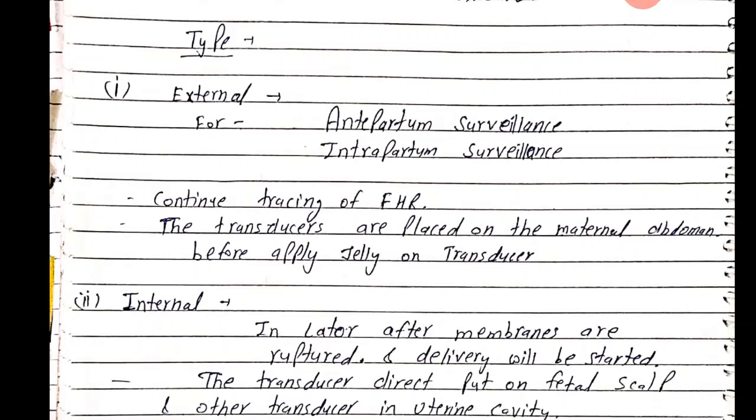For external CTG, transducers are placed on the maternal abdomen after applying jelly. There are two transducers: one assesses the fetal heart rate, and the second assesses uterine contractions. The uterine contraction transducer is placed three fingers above the umbilicus.